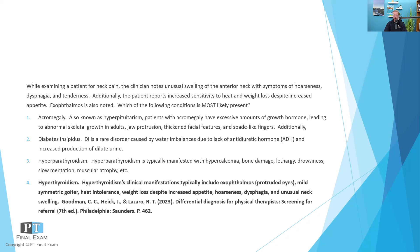Diabetes insipidus is a water imbalance where you have insufficient antidiuretic hormone — insufficient ADH. If you're not anti-diuresing, you are diuresing a lot, which means production of large quantities of dilute urine. Finally, hyperparathyroidism: I think of the parathyroid hormone as the primary calcium mediator for the bloodstream. Hyperparathyroidism increases calcium concentration by pulling it from bones, causing significant bone resorption and hypercalcemia. Signs and symptoms include lethargy, drowsiness, slow mentation, muscular atrophy, and hyperreflexivity — all related to excess calcium in the blood.